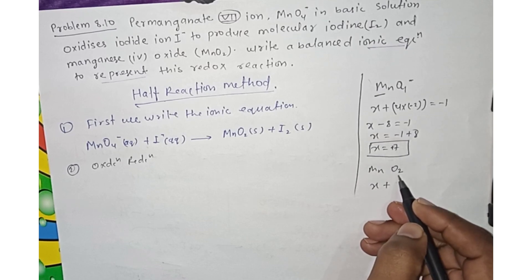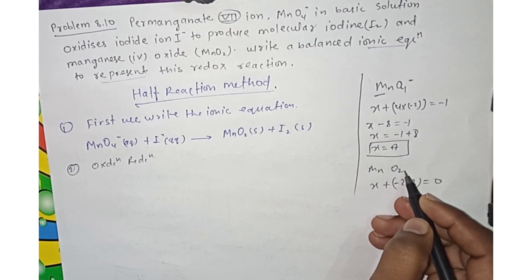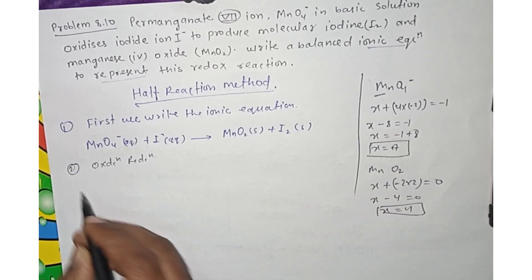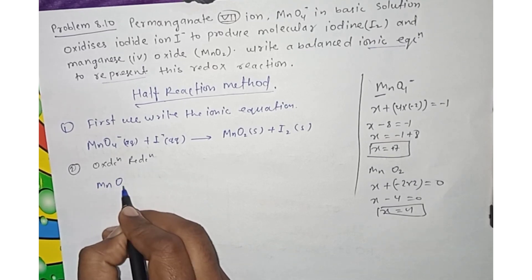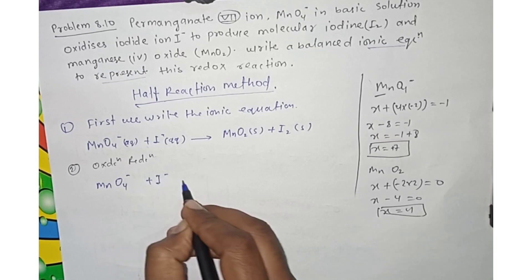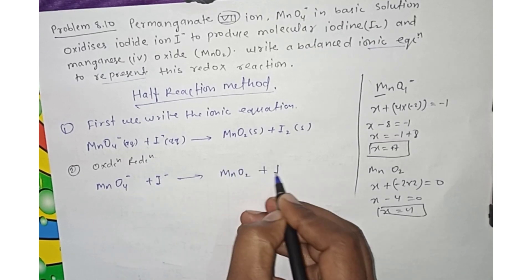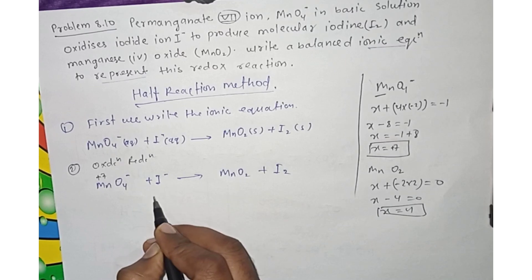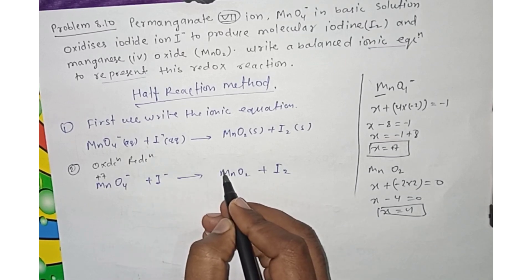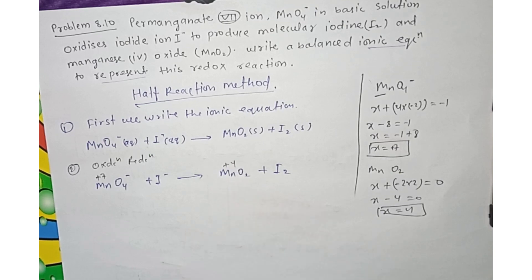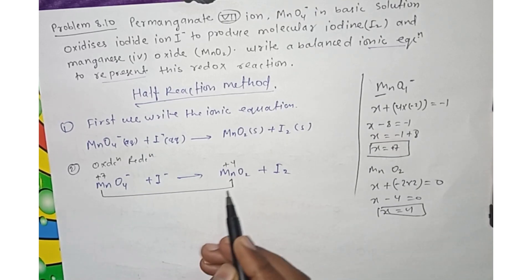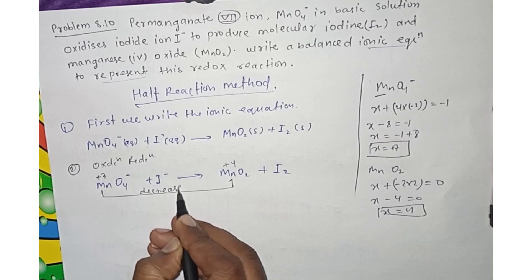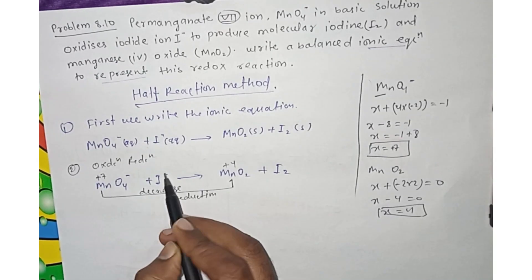For MnO2: Mn plus (minus 2 times 2) equals zero charge, so Mn is plus 4. So Mn goes from plus 7 in MnO4⁻ to plus 4 in MnO2 — that is a decrease, so MnO4⁻ undergoes reduction. Now check iodine: I⁻ has a charge of minus 1.